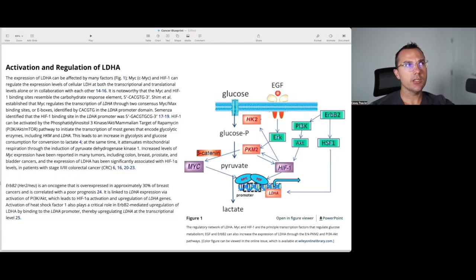What we have not had a chance to really talk about is how lactate dehydrogenase is truly regulated. The expression of LDHA can be affected by many factors. MYC or CMYC and HIF-1 can regulate the expression levels of cellular LDH at both the transcriptional and translational levels alone or in collaboration with each other. HIF-1-alpha can be activated by the PI3K-AKT-MTOR pathway to initiate the transcription of most genes that encode for glycolytic enzymes, including hexokinase and LDHA.